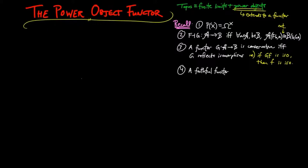Four, a faithful functor reflects monomorphisms and epimorphisms. And five, a topos is balanced. In other words, a morphism which is both a monomorphism and an epimorphism is an isomorphism.